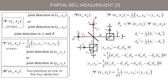The first case is characterized by a joint detection between the two channels gamma and delta, while the second case is characterized by a joint detection between the two output channels of one of the polarization splitters.